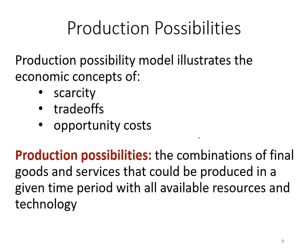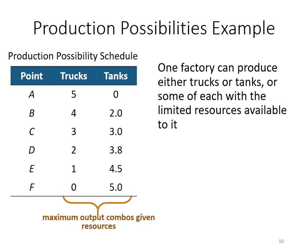That example illustrates the production possibilities. Now let's look at an example with more numbers, which will help you better understand production possibilities. There is a nation making a decision to use their limited resources to produce trucks and tanks.